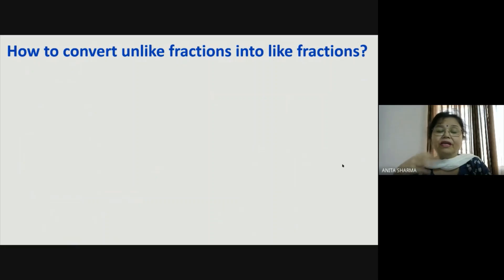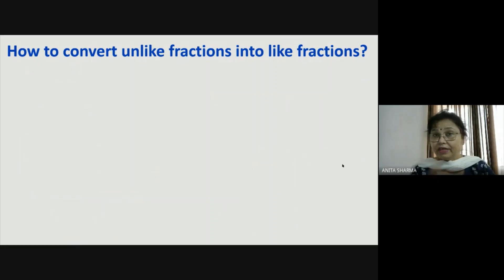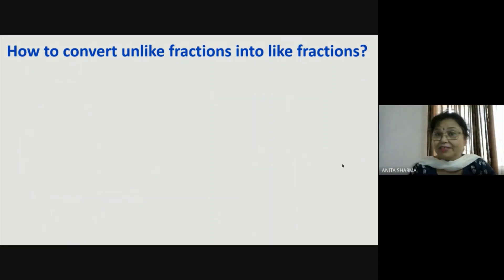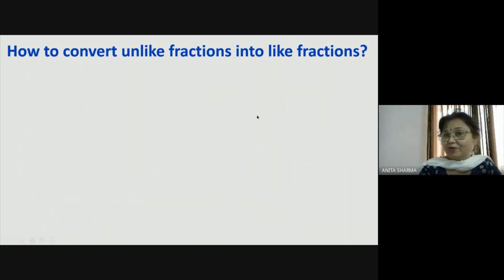Now, how do we convert unlike fractions into like fractions? Here's an analogy: if I have five mangoes in one basket and four apples in another, we cannot add them directly because they are not the same kind. But with a trick — if I say how many fruits are there — mango is also a fruit and apple is also a fruit, so both fall into the same category. There are nine fruits. Similarly, we need a trick to convert unlike fractions into like fractions.